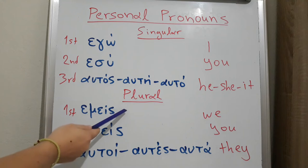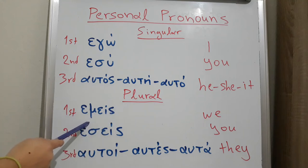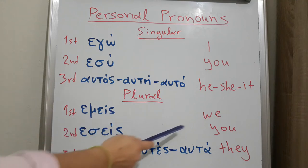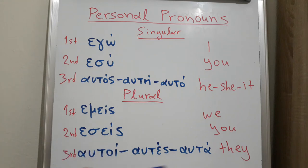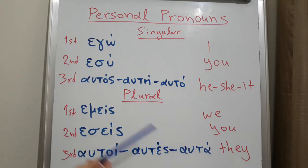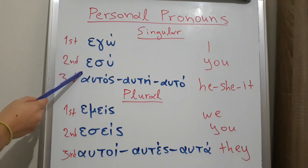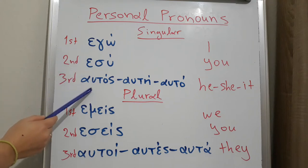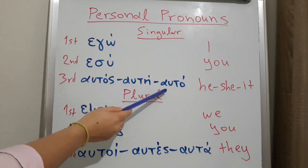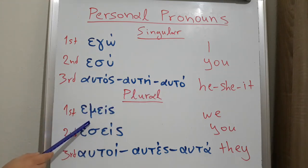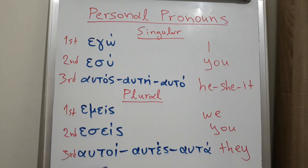In plural, the first person is εμείς — we. Εσείς — you. And the third person: αυτοί. Εμείς, εσείς, αυτοί, αυταίς, αυταί.